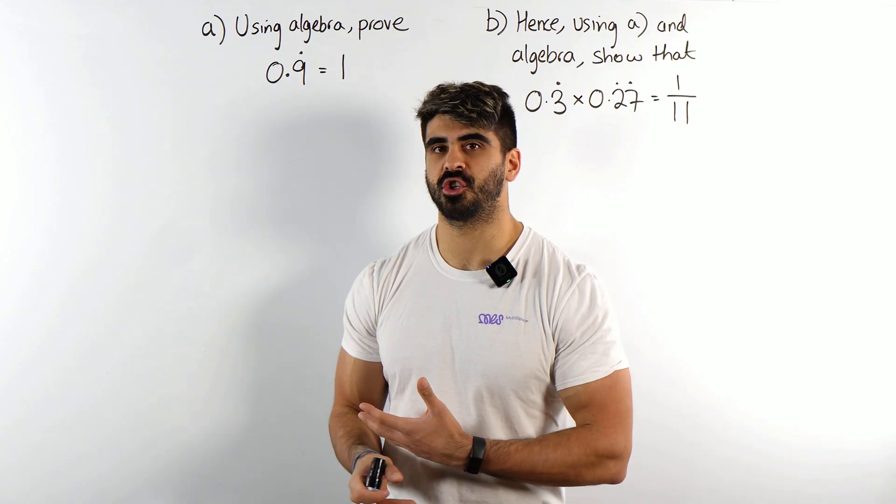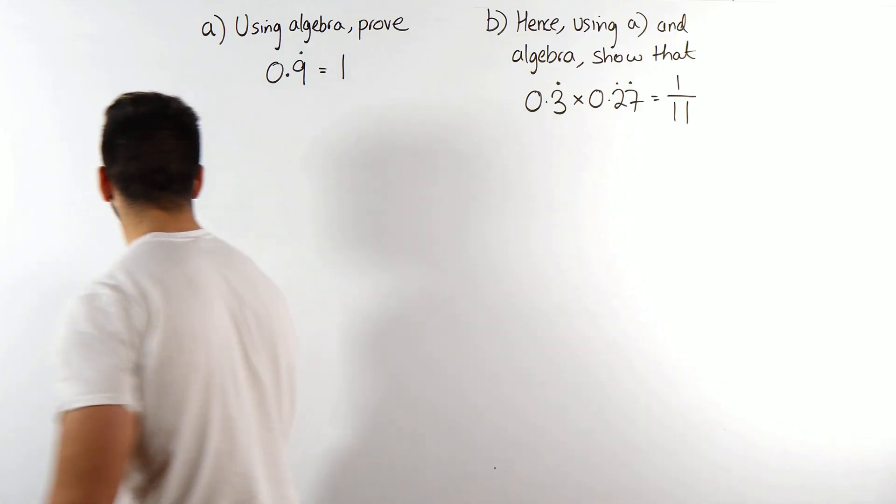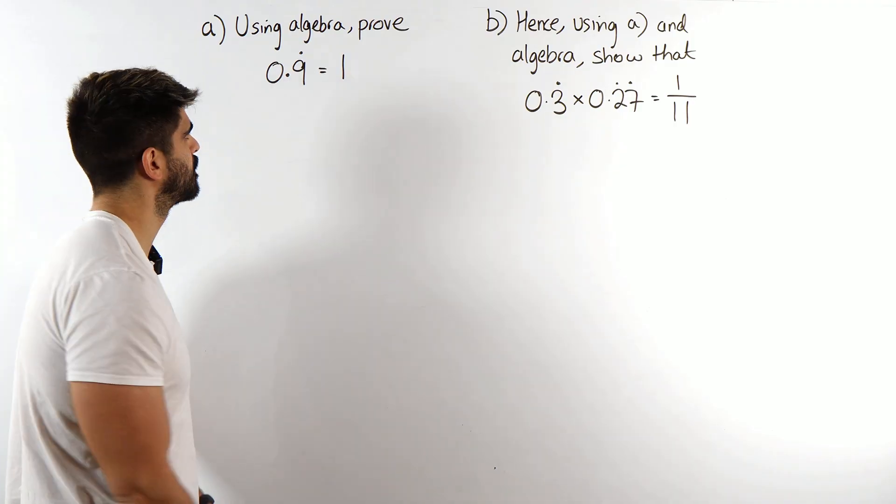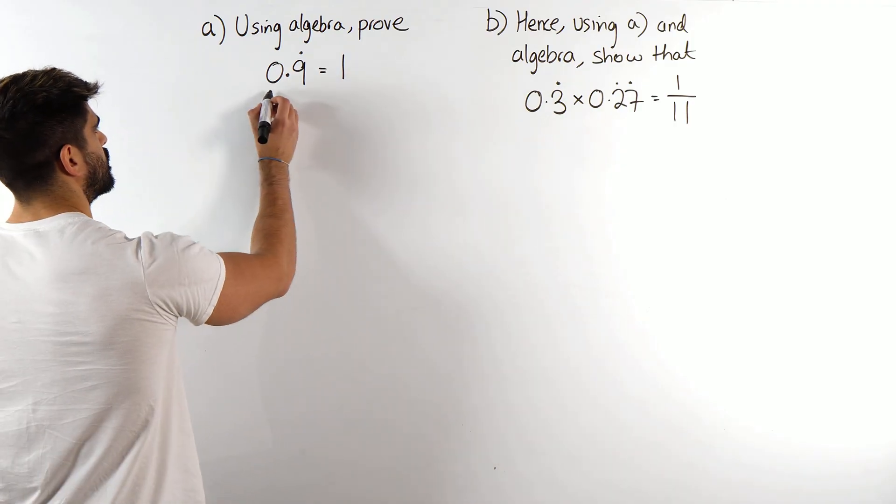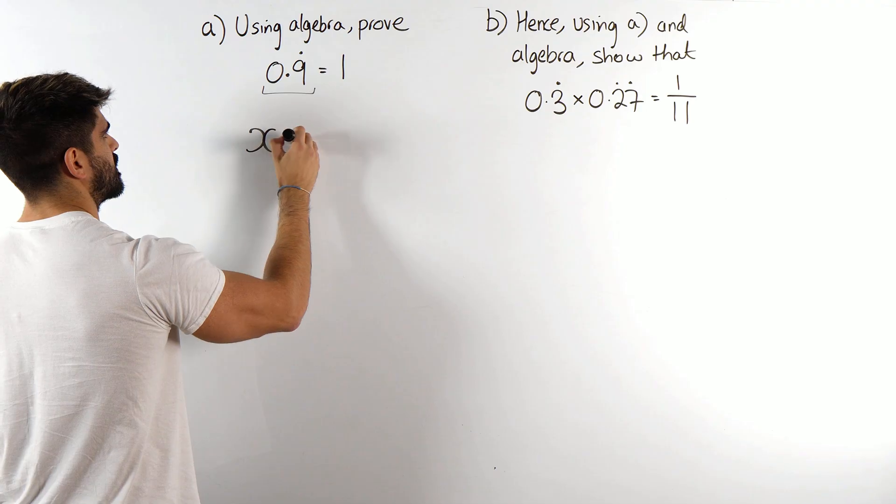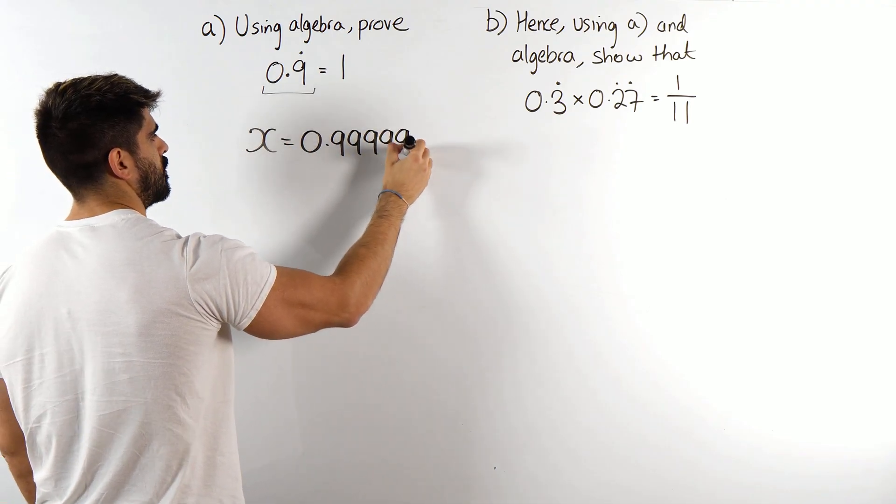So recurring decimals should be the easiest marks or one of the easiest marks we can get within the exam. Now they want us to use algebra to prove it. How do we do that? What we do is we let x equal this recurrence. So let x equal 0.999999 and so on.